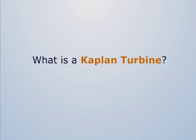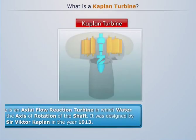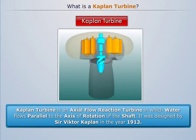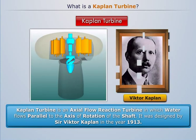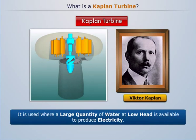What is a Kaplan turbine? A Kaplan turbine is an axial flow reaction turbine in which water flows parallel to the axis of rotation of the shaft. It was designed by Sir Victor Kaplan in the year 1913. It is used where a large quantity of water at low head is available to produce electricity.